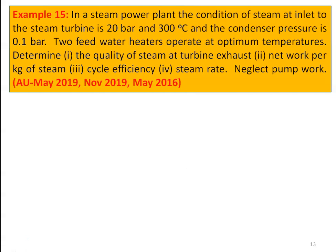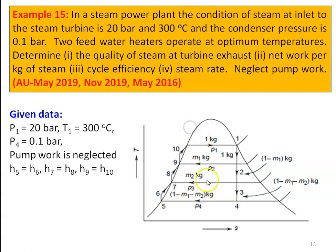We take Example number 15, which was asked in May 2019, November 2019, and May 2016. In a steam power plant, steam enters the turbine at 20 bar and 300 degree Celsius, condenser pressure is 0.1 bar. Two feed water heaters operate at optimum temperatures. Determine: quality of steam at turbine exhaust, net work per kg, cycle efficiency, and steam rate. Pump work is neglected, so H5 equal to H6, H7 equal to H8, and H9 equal to H10. Given P1 equal to 20 bar, T1 equal to 300°C, P4 equal to 0.1 bar.